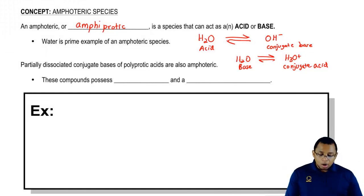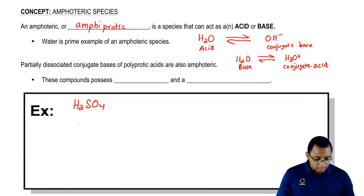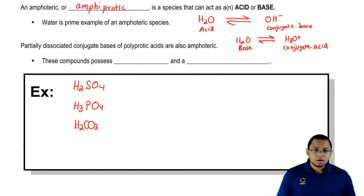Now we're going to say here, partially dissociated conjugate bases of polyprotic acids are also amphoteric. What the heck does that mean? Basically, it means we say that polyprotic acids are acids with more than one H positive. Example, H2SO4, H3PO4, H2CO3. These are all polyprotic. They have more than one H positive in their formula.